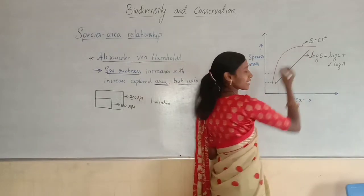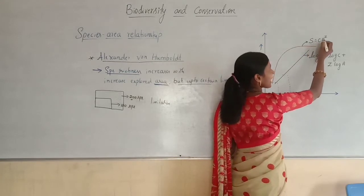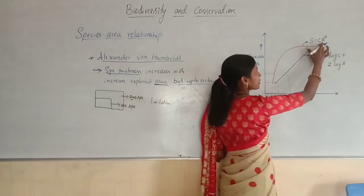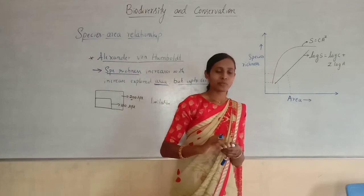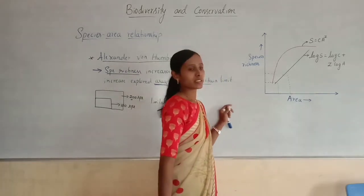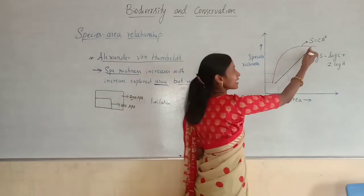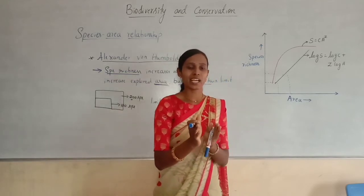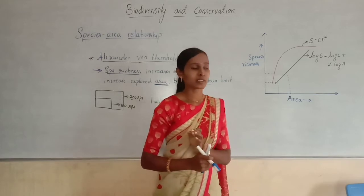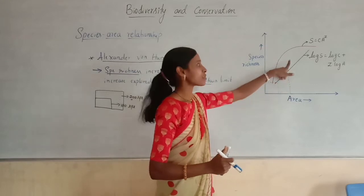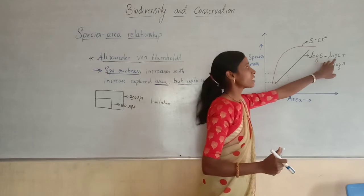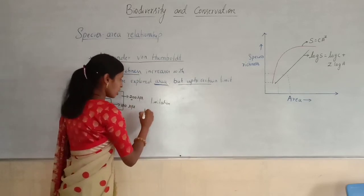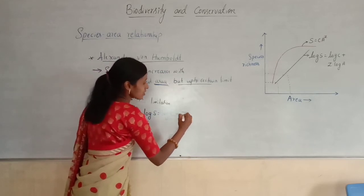This curve representing the rectangular hyperbola can be described as S = CA^Z. But on the logarithmic scale, this relationship between species richness and area is usually a straight line. On the logarithmic scale, this relationship is described as log S = log C + Z log A.